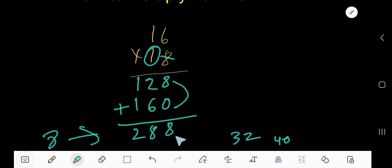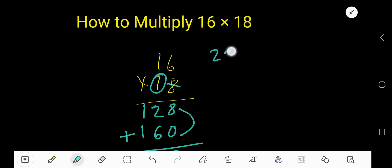288 is the answer. So 288. The product of 16 and 18 is 288. This is the answer.